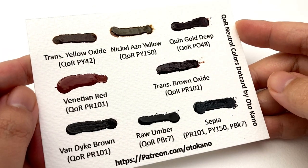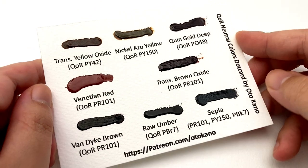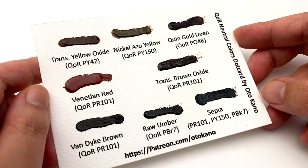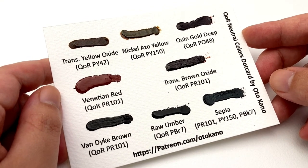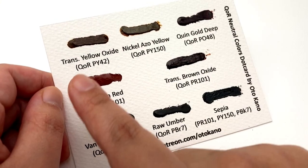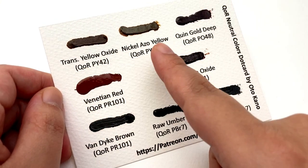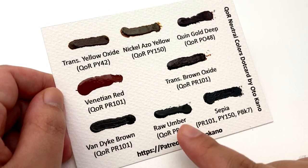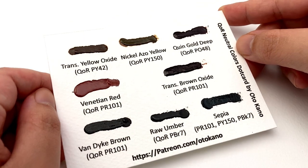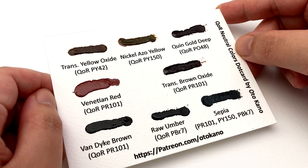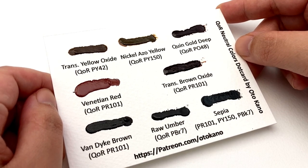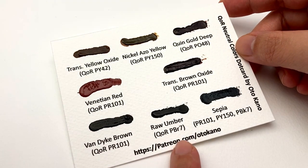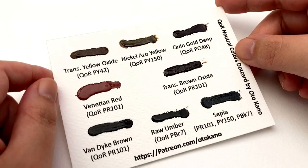By the way, if you want to try any of these colors, I have the companion dot card for you this month to the episodes that we are seeing this month. And this is the Core neutral color dot card. This is part three and the final part of the Core dot cards that I'm going to be making. It has transparent yellow oxide, nickel azo yellow, queen gold deep, venetian red, transparent brown oxide, van dyke brown, raw umber, and sepia. This is a great way to try out the Core colors without having to buy every single tube to find out which one's going to work for you. If you'd like to receive this dot card, then you can do so by heading over to patreon.com forward slash autocarno and signing up to the appropriate tiers.